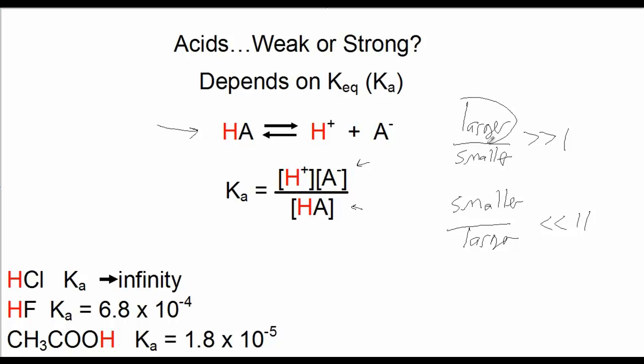Well, if the numerator is larger, much larger than the denominator, remember, the numerator is the products. And if one of the products is the hydrogen ion, and the hydrogen ion is the measure of acidity, well, that means that the larger the numerator, the more acid, the more the hydrogen ion, the larger the equilibrium constant, therefore, the stronger the acid.